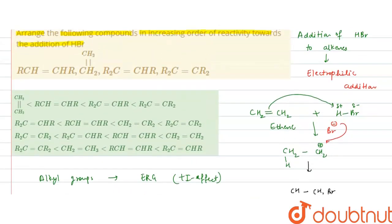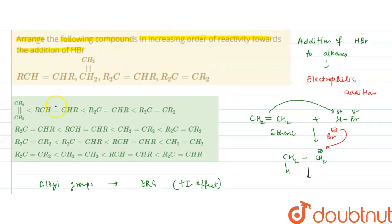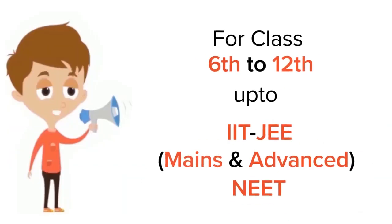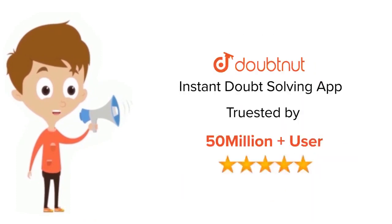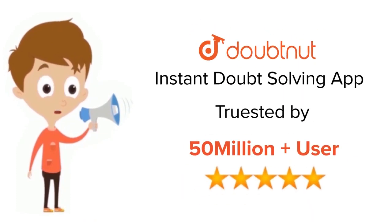Looking at the options, the compound with maximum reactivity appears in option A. After it come three alkyl groups, then two, then one. So option A is the correct answer — this is the increasing order of reactivity towards addition of HBr. I hope you understood it. Thank you.